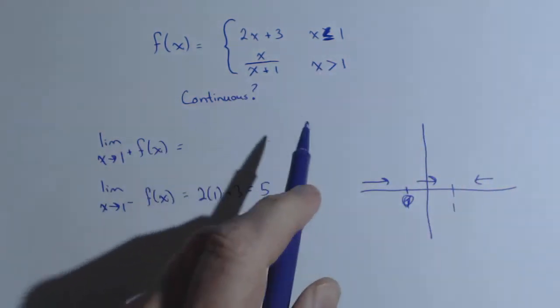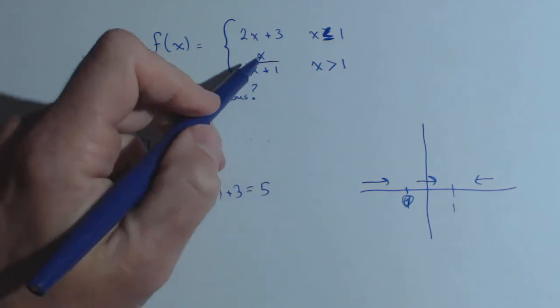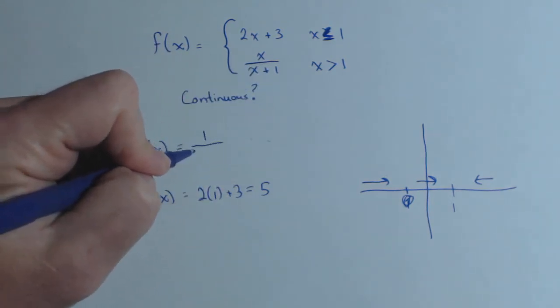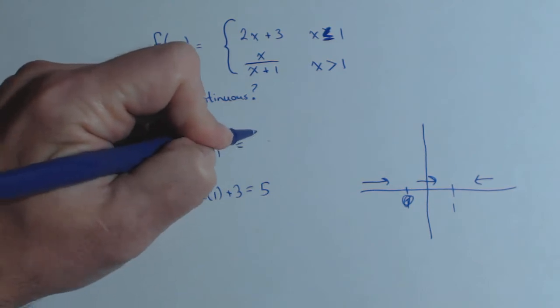As we come in from the right, we're using values greater than 1, so we use this piece: 1 over 1 plus 1, or 1 half.